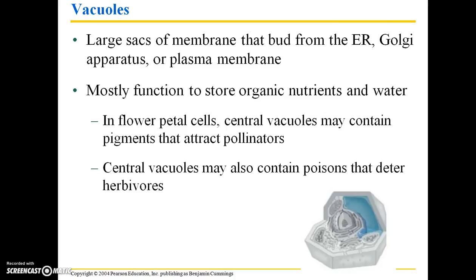Vacuoles are large sacs of membrane that bud off from the ER, Golgi apparatus, or plasma membrane, and they mostly function to store organic nutrients as well as water. In flower petal cells, the central vacuoles may contain pigments that attract pollinators. Those pollinators can often perceive those pigments differently than we do — they generally appear brighter, almost fluorescent, and help attract pollinators.